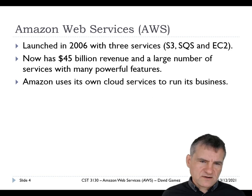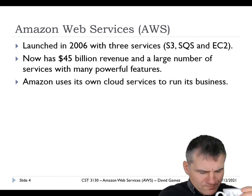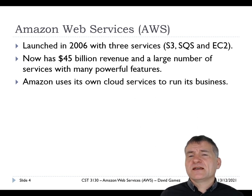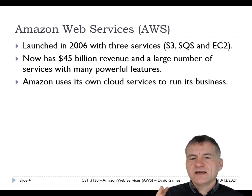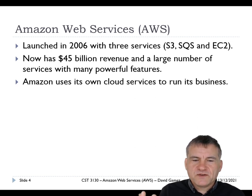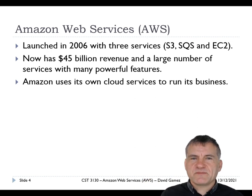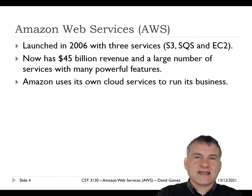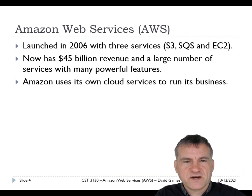AWS has been around for about 15 years, launching in 2006 with just three services. It's now the biggest cloud provider with $45 billion in revenue. It has loads of services, and Amazon uses its own cloud to run its business. A lot of AWS started because Amazon needed massive capacity to handle Black Friday sales, and then began reselling its compute and storage services.